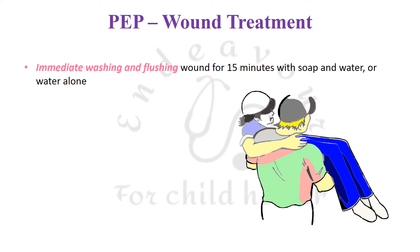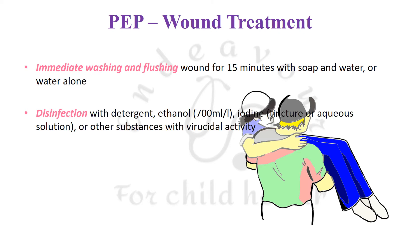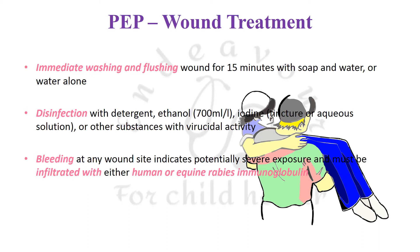Regarding wound treatment: immediate washing and flushing should be done for around 15 minutes with soap and water, or water alone if soap is not available. Disinfection with detergent, ethanol, iodine, aqueous solution, or other substances with virucidal activity should be done — this step is sometimes missed. Bleeding at any wound site indicates potential exposure and must be infiltrated with human or equine rabies immunoglobulin in category three. Local antibiotics and tetanus prophylaxis must not be missed.